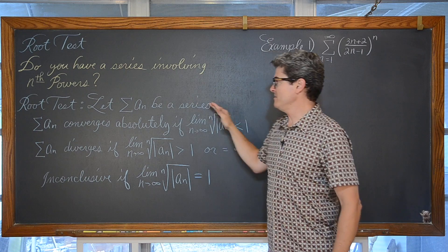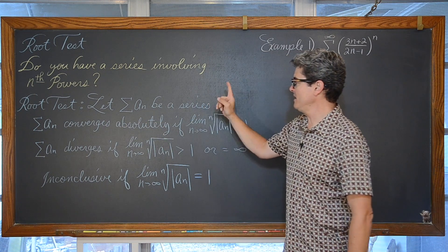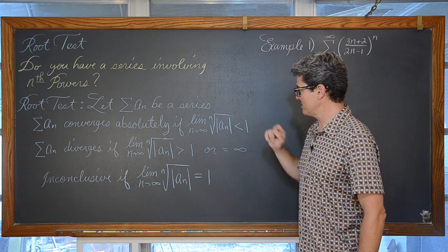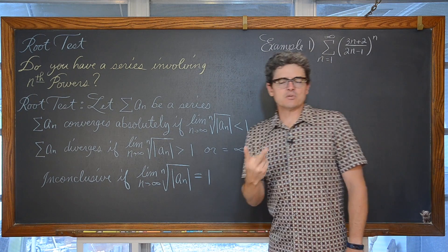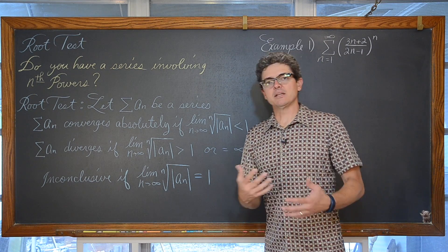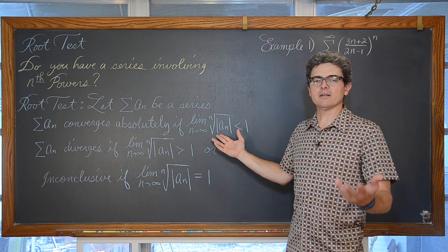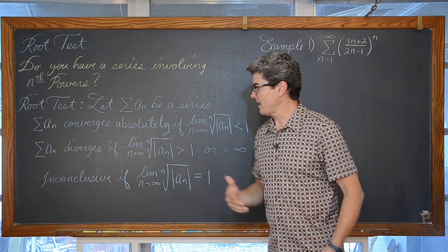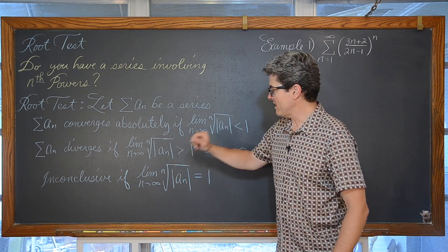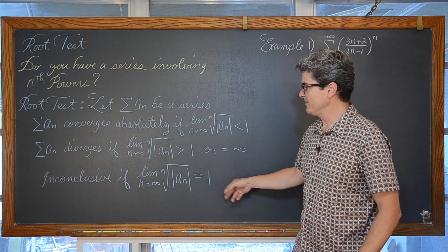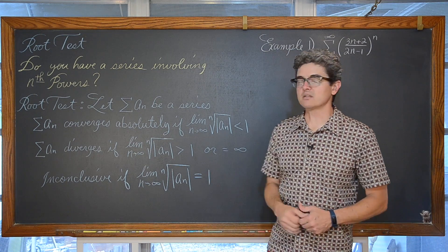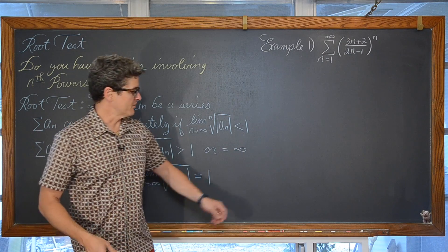Let the summation of a_n be a series. That series converges absolutely if the limit as n approaches infinity of the nth root of the absolute value of a_n is less than 1. Our series is going to diverge if that limit is either greater than 1 or infinity. And if you get a limit equal to 1, the test is inconclusive — we have not determined whether the series converges or diverges.